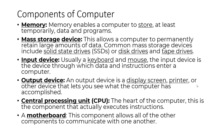Mass storage devices allow a computer to permanently retain large amounts of data. Common mass storage devices include solid state drives, disk drives, and tape drives. Input devices — keyboard and mouse — are the devices through which data and instructions enter a computer. An output device is a display screen, printer, or other device that lets you see what the computer has accomplished. The computer processes the input and gives us the output, displayed via output devices like a monitor or printer.